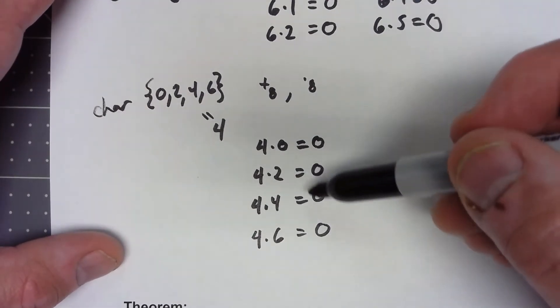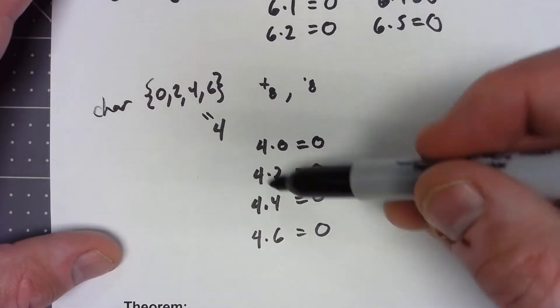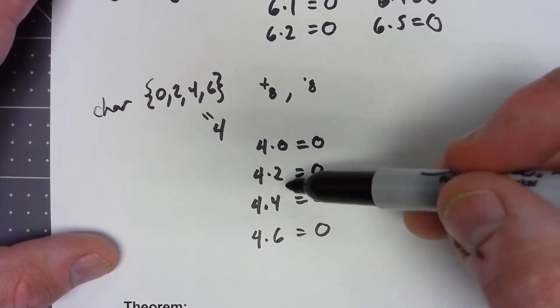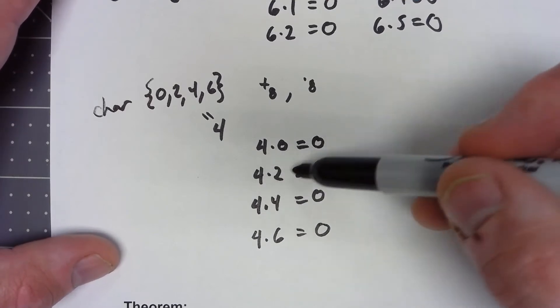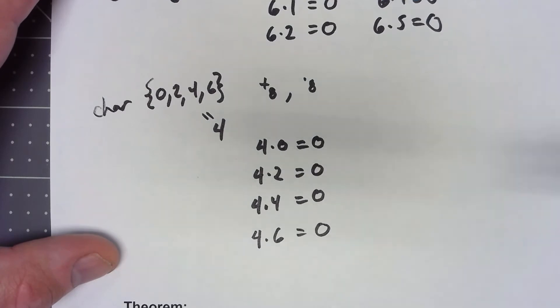Again, nothing lower than 4 would work, specifically because of 2. There's no smaller number than 4 you can multiply 2 by to get 0.